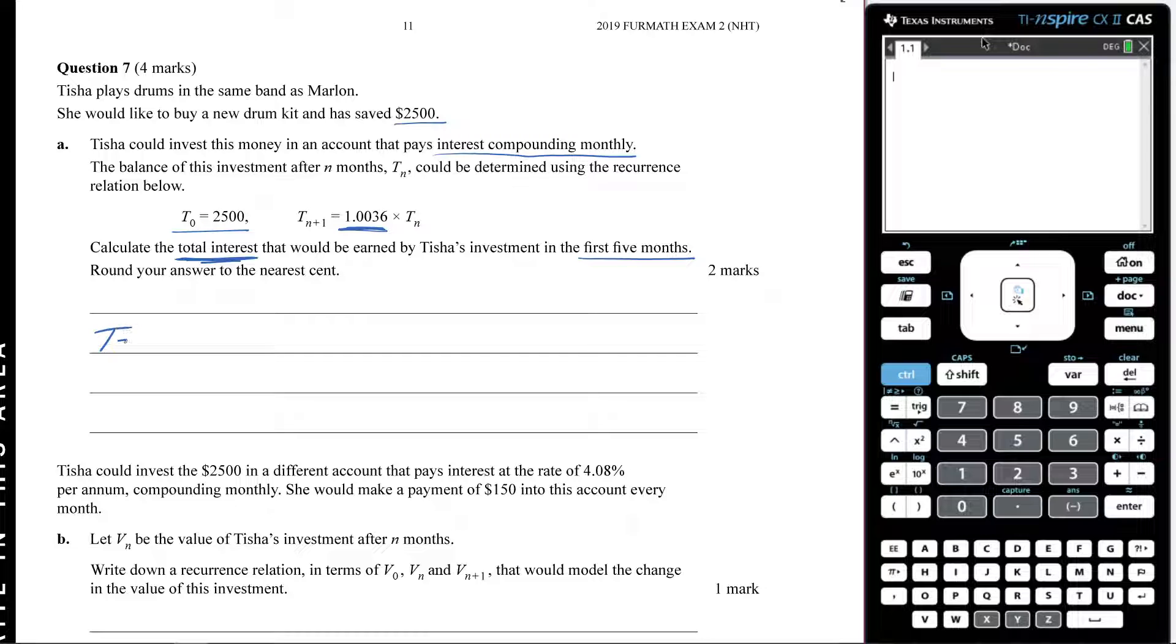So the first thing we want to do is find what T5 is going to be. How much are we going to have in our account after the first five months? There's a couple of different ways you could go about this. You could come to your calculator and type in $2,500 because that's the amount you're starting with. Hit enter and then times it by this number right here, so 1.0036.